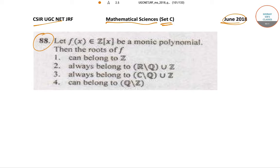In question 88, it states that f(x) belongs to Z[x] and is a monic polynomial. The roots of f: Option 1 can belong to Z. Option 2 always belong to (R\Q)∪Z. Option 3 always belong to (C\Q)∪Z. Option 4 can belong to Q\Z. These are the four options given.